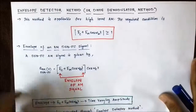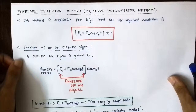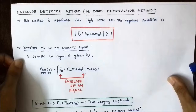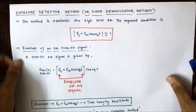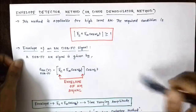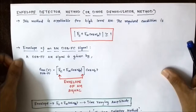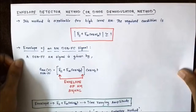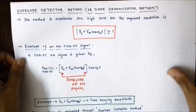The square law demodulator method, as discussed in my previous video, was applicable for low amplitude level signals — signals which are less than 1 volt, or where the modulation index is less than 1. The envelope detector method, as opposed to the square law demodulator, is applicable for high-level DSBFC signals which are greater than 1 volt. This method is best suited for high amplitude level signals.